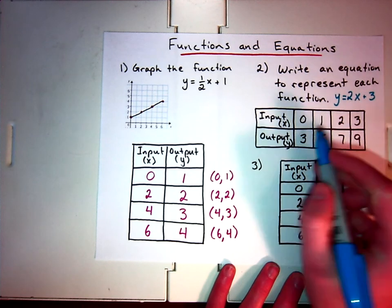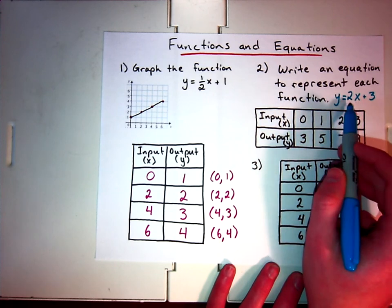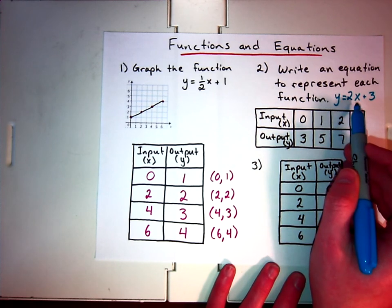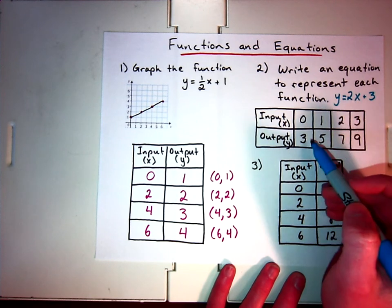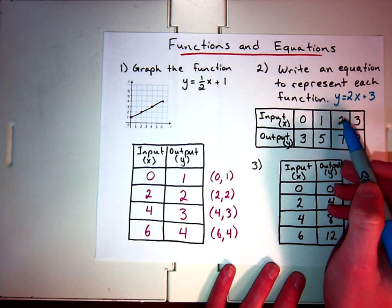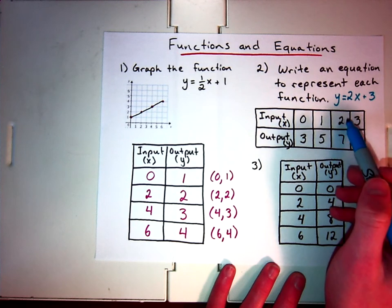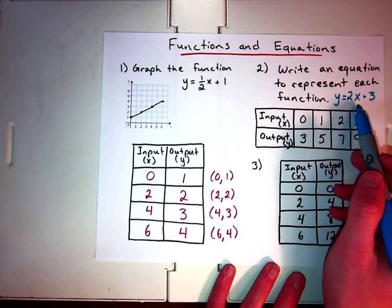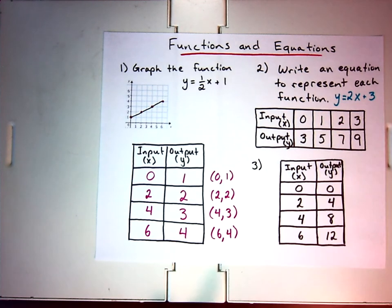So let's try it. Well, 0 times 2 is 0. That's the 0 property of multiplication. So 0 plus 3 is 3. So that works so far. How about 1 times 2 plus 3? Well, 1 times 2 is 2, plus 3 is 5. Let's try 2. So when x is 2, 2 times 2 is 4, plus 3 is 7, and it's going to work. That is our equation.